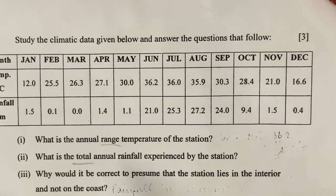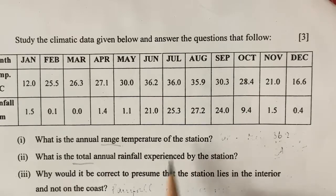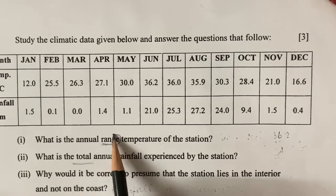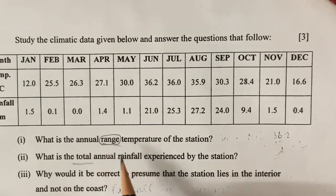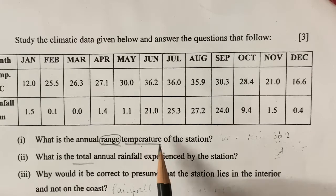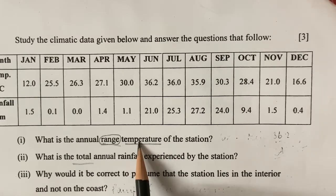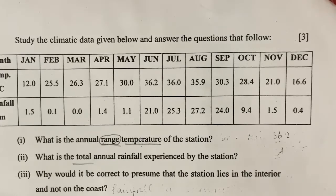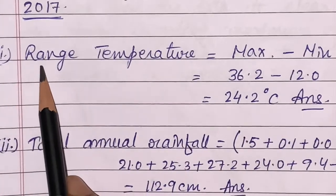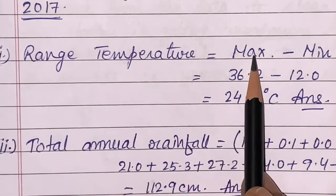Question 1 is: what is the annual range of temperature of the station? You should pay attention to the word 'range' and the word 'temperature,' which means you have to find the maximum value of temperature minus the minimum value of temperature. I have done this for you — first I wrote the formula: range of temperature is equal to maximum minus minimum.